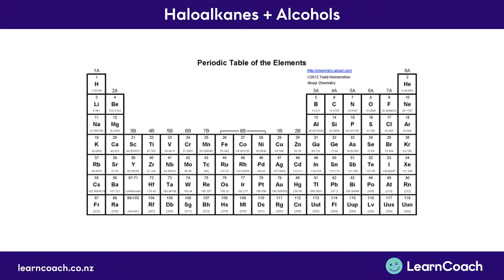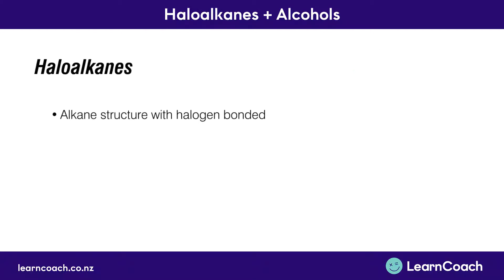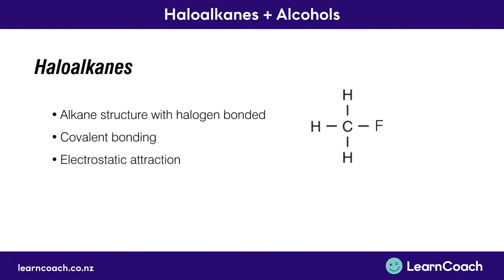Looking at the periodic table, group 17 contains our halogens. Haloalkanes are an alkane structure with a halogen bonded to it. Carbon has four bonding sites and we can replace one of the hydrogens with a halogen — here we've put in a fluorine. This is covalent bonding, which is also electrostatic attraction because it involves electrons sharing their charges.